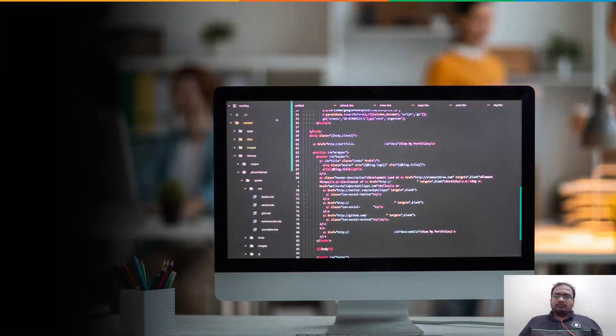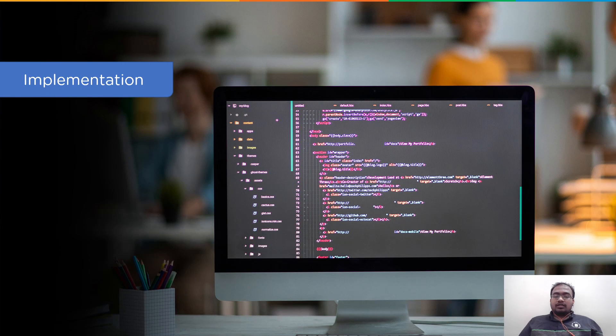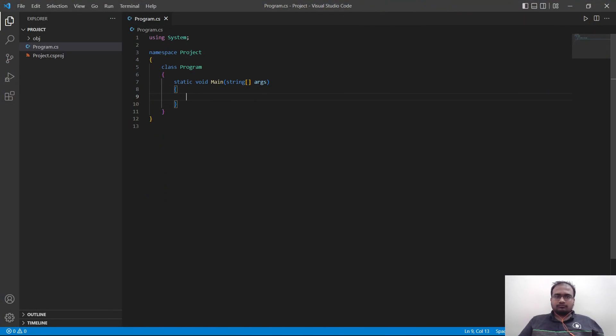Now that we are familiar with the process of boxing and unboxing, let's go to Visual Studio Code and implement them. Let's start by creating a double. We will have a double x equals to 10.3. Then we can create an object obj equals to x. And now this process of writing object obj equals to x is called boxing.